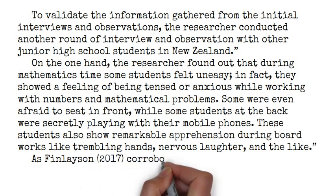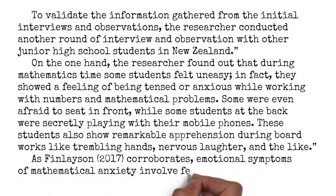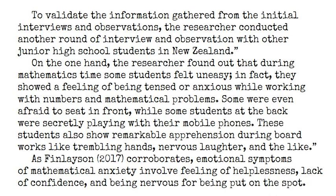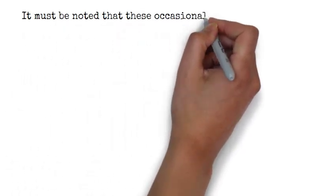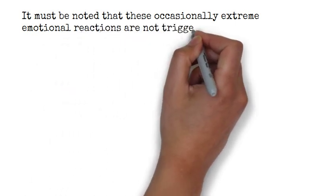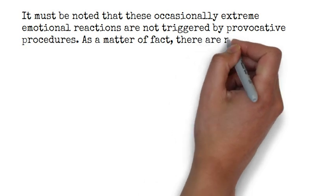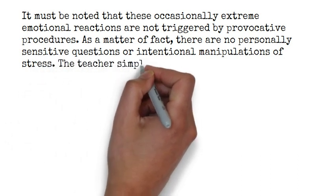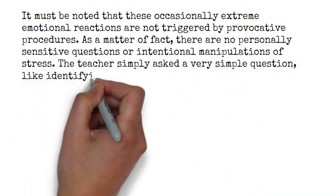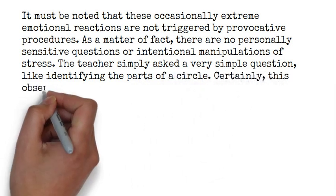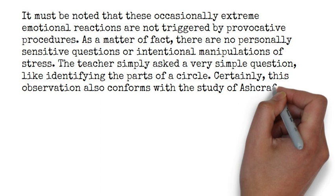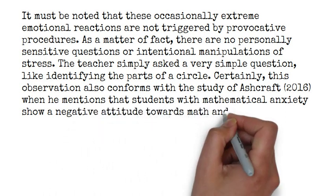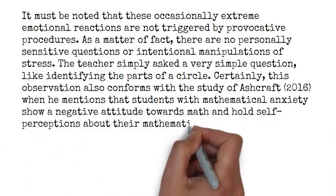As Finlayson corroborates, emotional symptoms of mathematical anxiety involve feeling of helplessness, lack of confidence, and being nervous for being put on the spot. It must be noted that these occasionally extreme emotional reactions are not triggered by provocative procedures. As a matter of fact, there are no personally sensitive questions or intentional manipulations of stress. The teacher simply asked a very simple question, like identifying the parts of a circle. Certainly, this observation also conforms with the study of Ashcroft when he mentions that students with mathematical anxiety show a negative attitude towards math and hold self-perceptions about their mathematical abilities.